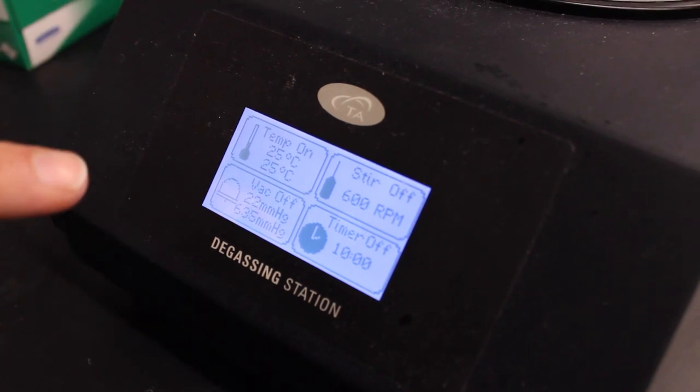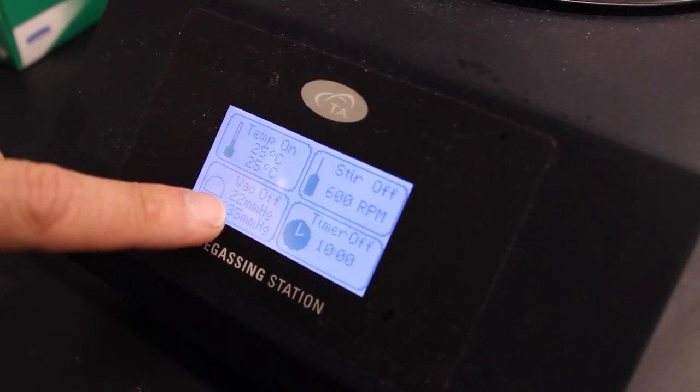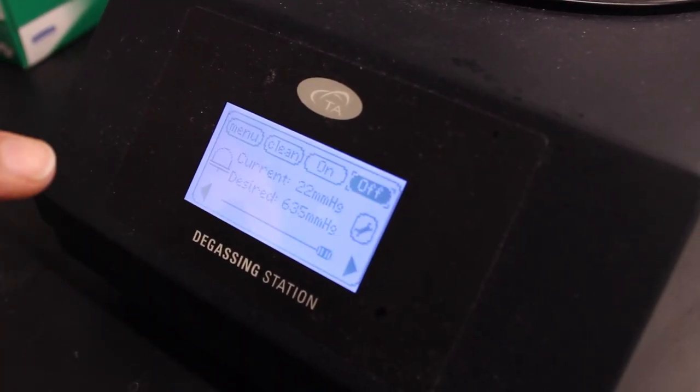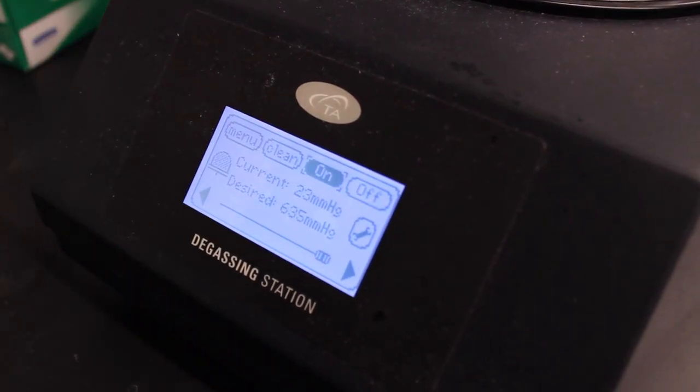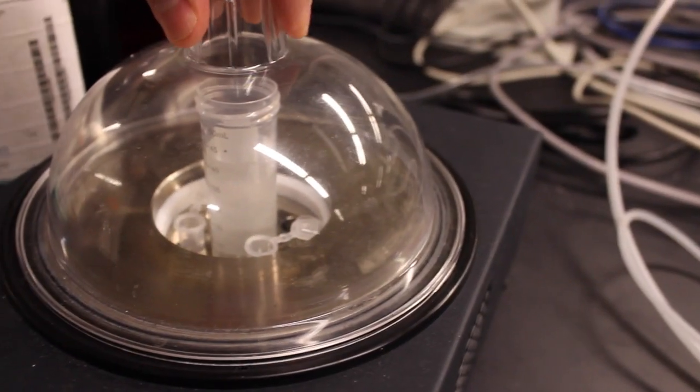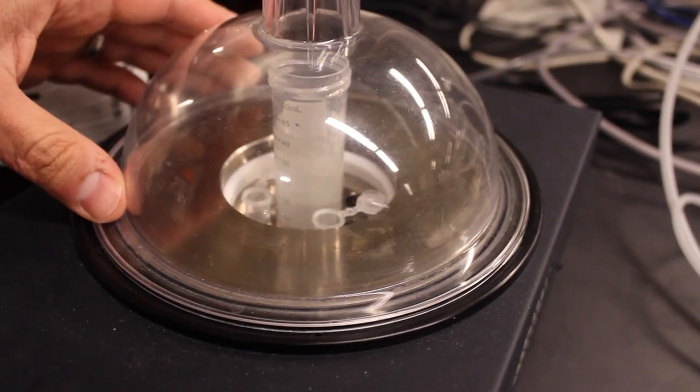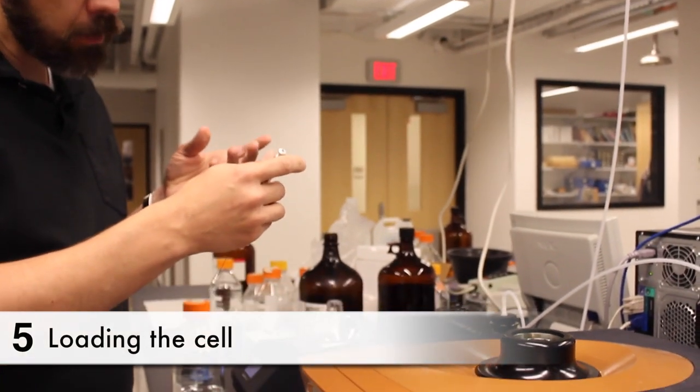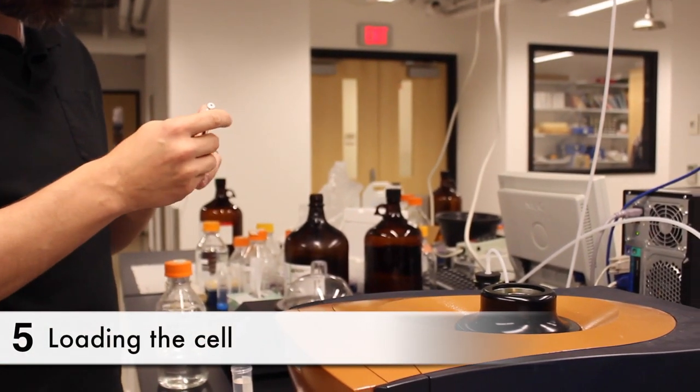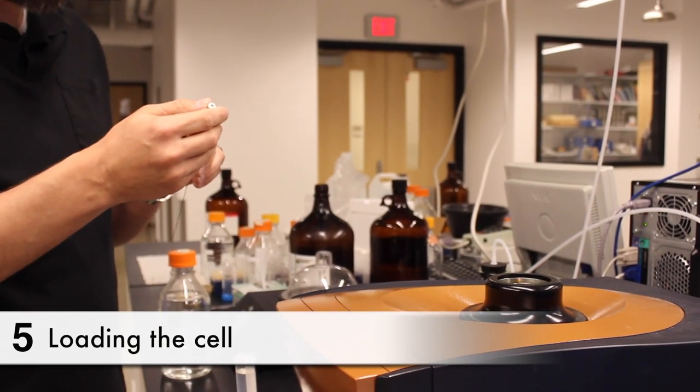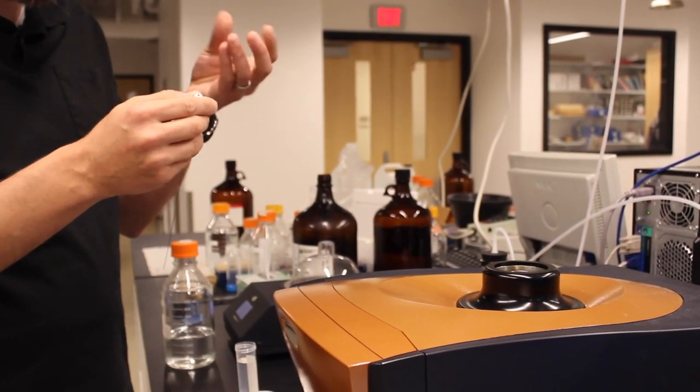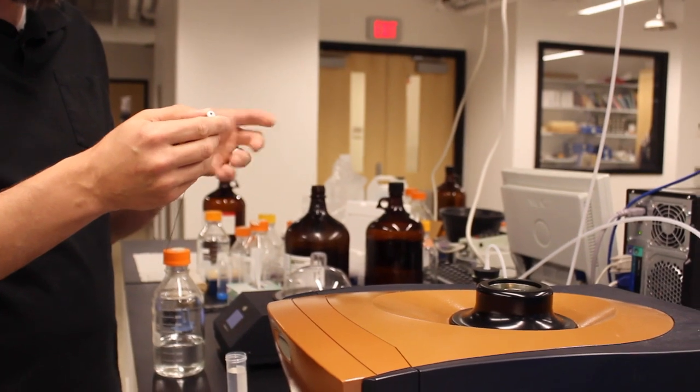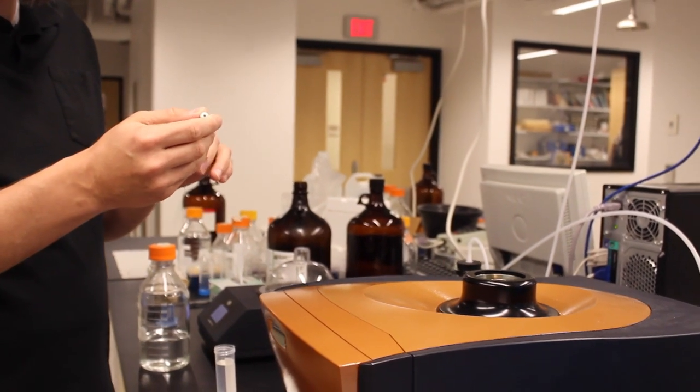To degas, what you want to do is to turn on the vacuum. That will start pulling a vacuum under this little bell jar here and now I'm going to load it with the liquid to put in the cell. As I said, normally it would be a buffer with your macromolecule in it. In this case it's just going to be water.